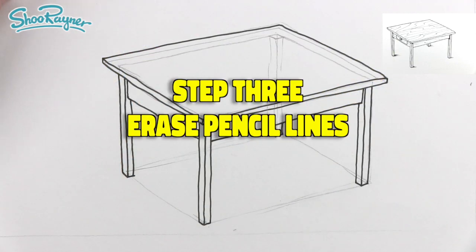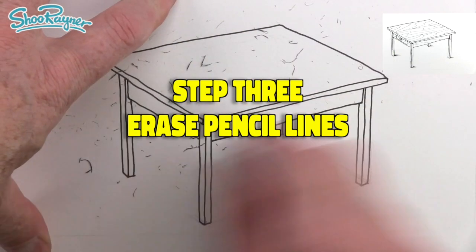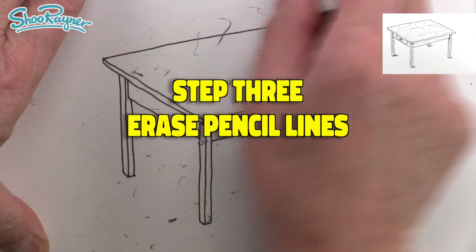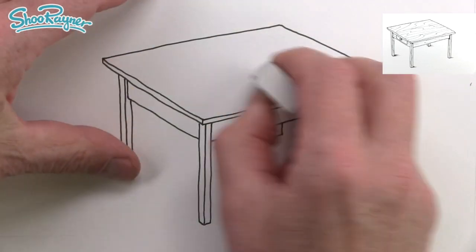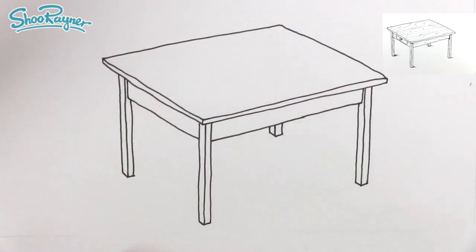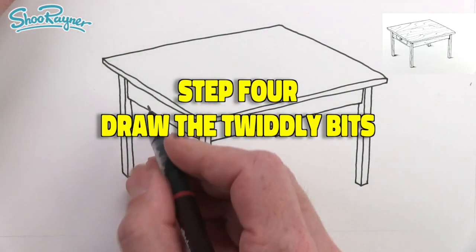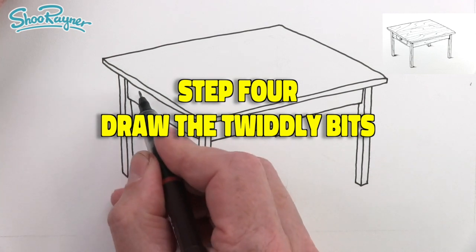Step three, when you're absolutely sure that the ink is dry you can erase those pencil lines, and then no one will know how you're going to draw so accurately.